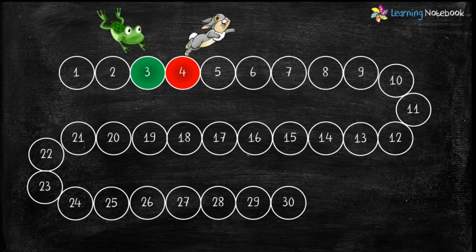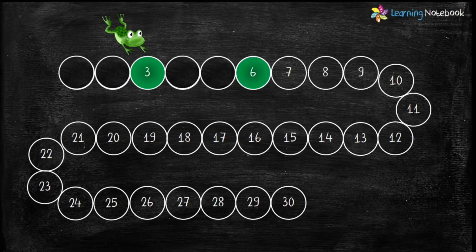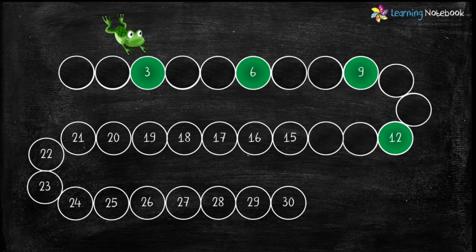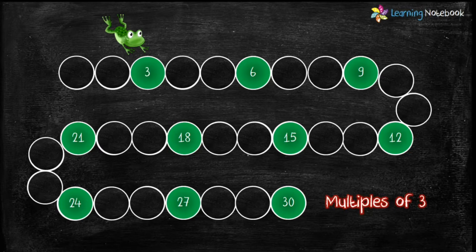Let's take an example to understand multiples. A frog is jumping three steps at a time and a rabbit is jumping four steps at a time. The frog will first jump on 3, then on 6, then again take three steps and jump on 9. In the same way the frog will jump on 12, 15, 18, 21, 24, 27, and 30.